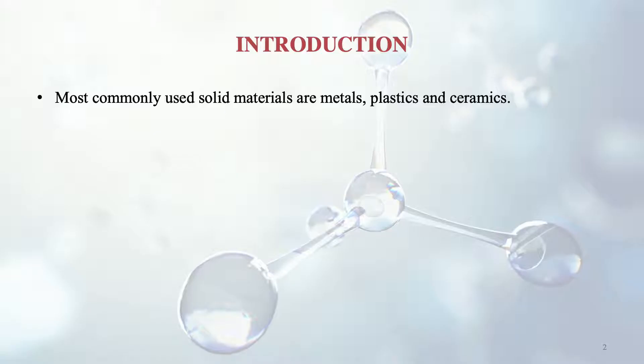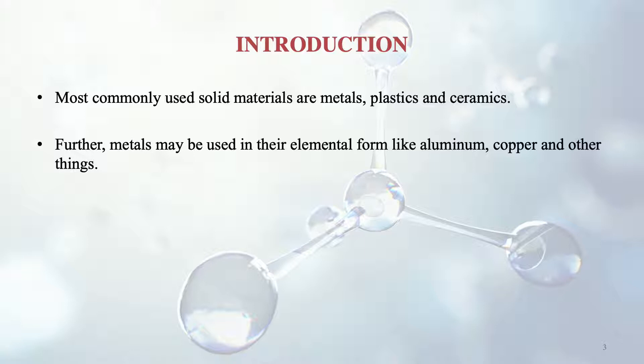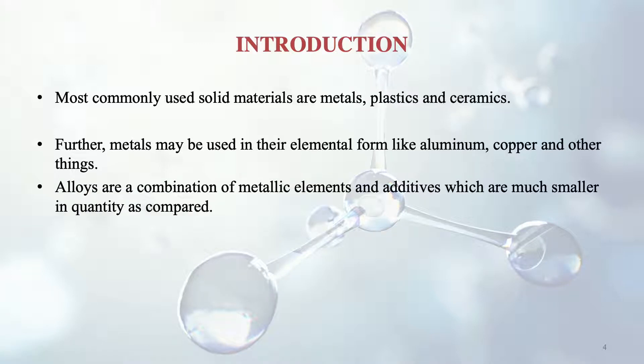The most commonly used solid materials in our lives are metals, plastics and ceramics. Metals may be used in their elemental form like aluminium and copper. Alloys are a combination of metallic elements and additives which are much smaller in quantity. So we are talking about alloys now — a combination of metallic elements with certain additives.